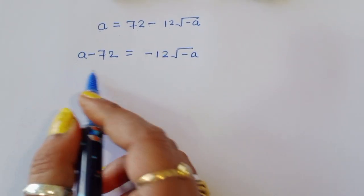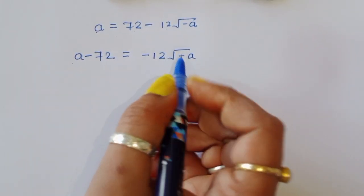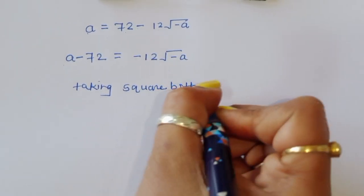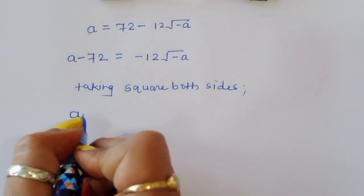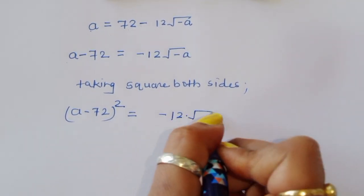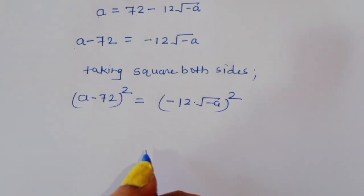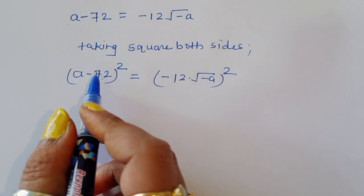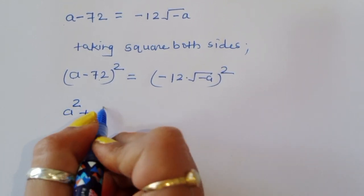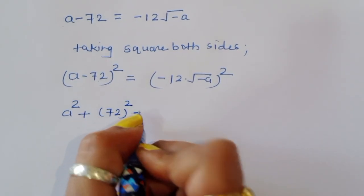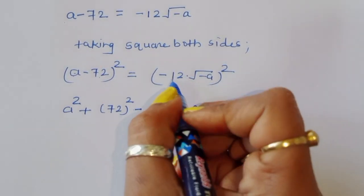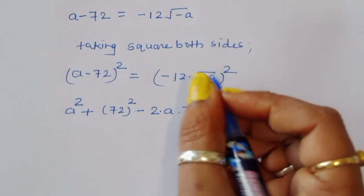Now a − 72 = −12√(−a). We take a square on both sides again to remove the square root: (a − 72)² = (−12√(−a))². This is again the (a − b)² formula: a² + b² − 2ab. So a² − 144a + 72² = (−12)² × (−a).